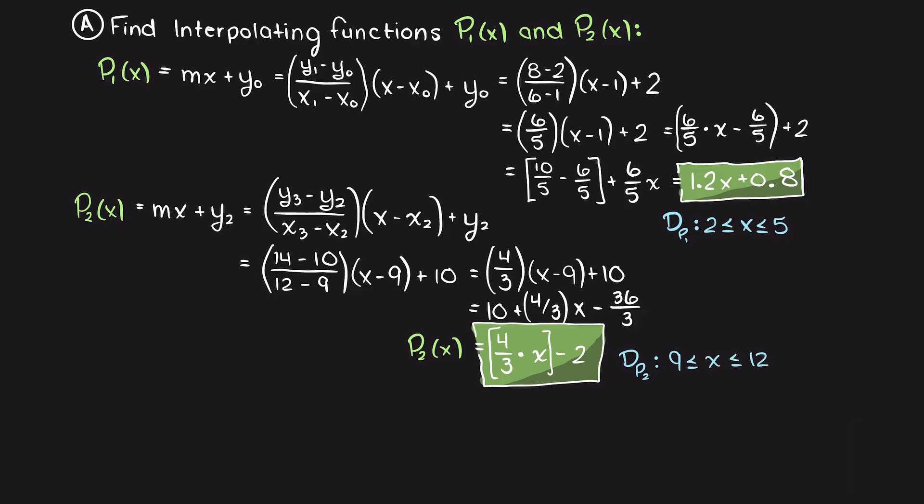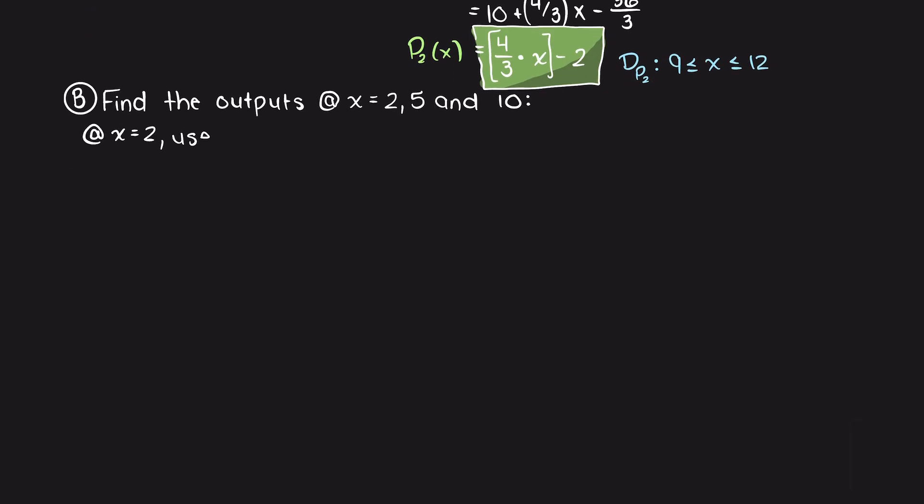Now, we have our interpolating functions, we just need to apply our desired inputs. Firstly, we have x equals 2 and since that is in our domain of p1, that is the function that we will use. And you can see that this results in an output of 3.2.